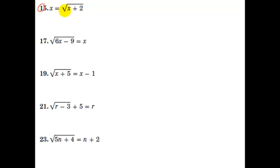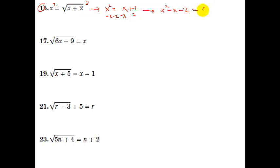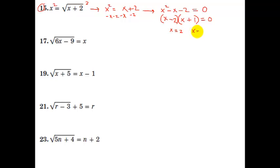Let's do number 15. We've got the radical by itself, so the first thing to do is to square both sides. When we do that, we get x squared equals — now the square and square root cancel — so I just get x plus 2. I'm going to need to subtract x from both sides and subtract 2 from both sides, and I'm going to get x squared minus x minus 2 equals 0. Because it's a quadratic expression, I want to get everything on one side and set it equal to 0. Now I can use factoring and the zero product property. So, x squared in the front means x times x, and 2 in the back with a negative x as my result means negative 2 and positive 1. My solutions are x equals positive 2 and x equals negative 1.